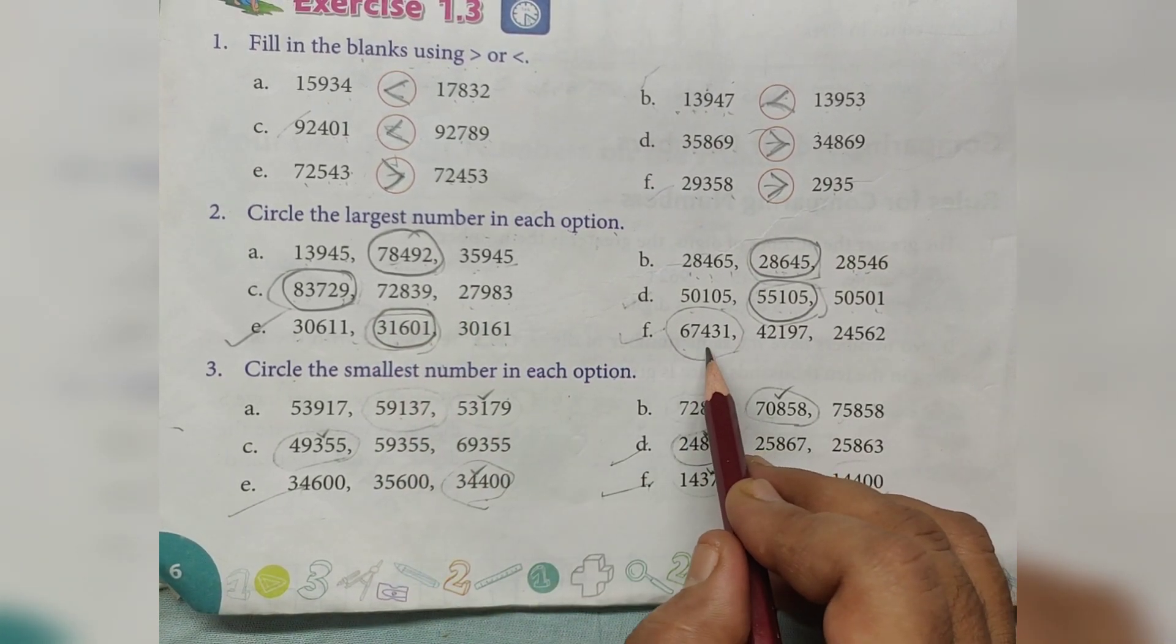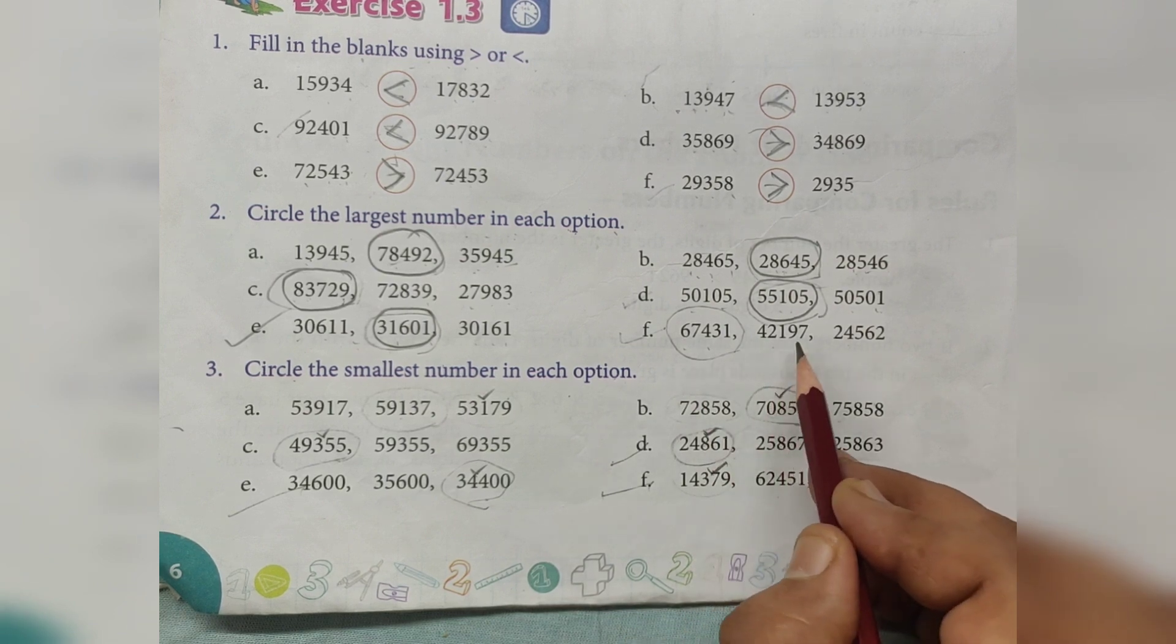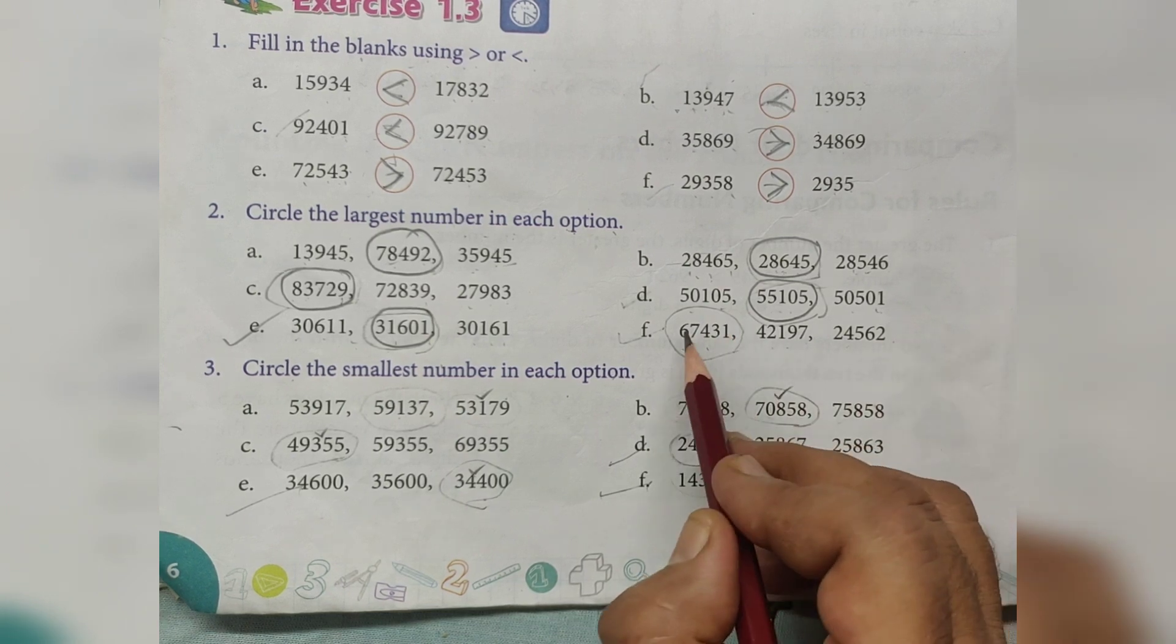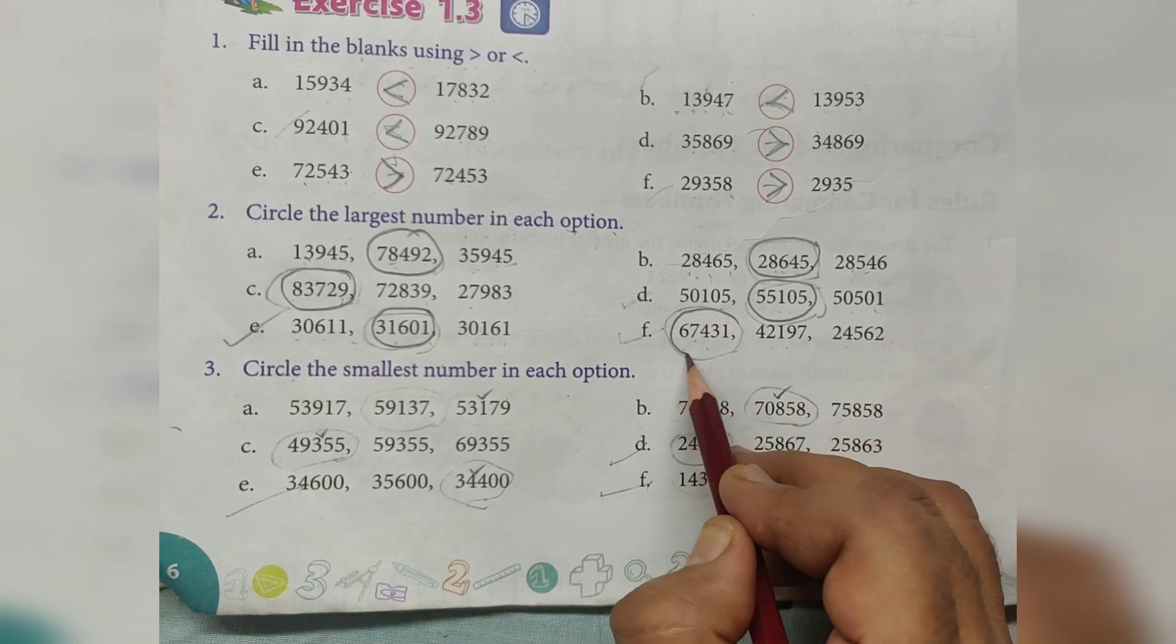67,431, 42,197, 24,562. 67,000, largest number.